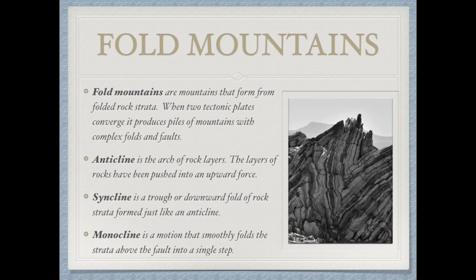Fold mountains are mountains that form when rock strata fold and bend — they may not have reached their elastic limit, so they can bend. There are three terms related to fold mountains. The anticline refers to the arch of rock layers pushed into an upward force. A syncline is more of a downward fold or trough, formed just like an anticline but dropping down. And a monocline is a fold that smoothly folds the strata above the fold, creating a step.